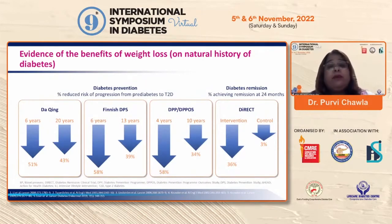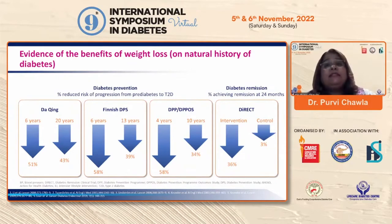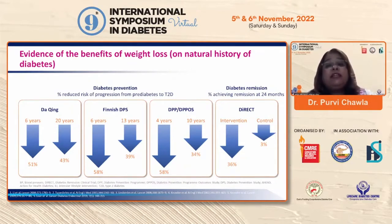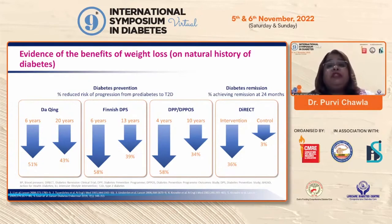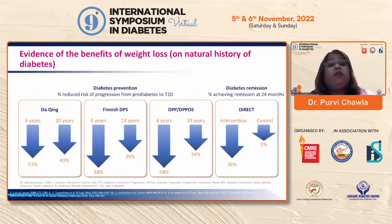Benefits of weight loss have been studied in several well-designed trials. The Finnish DPS study and others have shown that intensive lifestyle change aimed at weight loss is associated with a significant reduction in the progression from pre-diabetes to diabetes — almost 51 to 48 percent. In the DPP, intensive lifestyle was far better than metformin, but metformin also helped in weight loss and in containing the progression to diabetes.